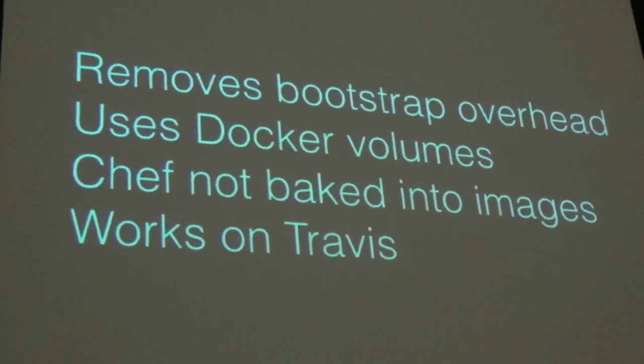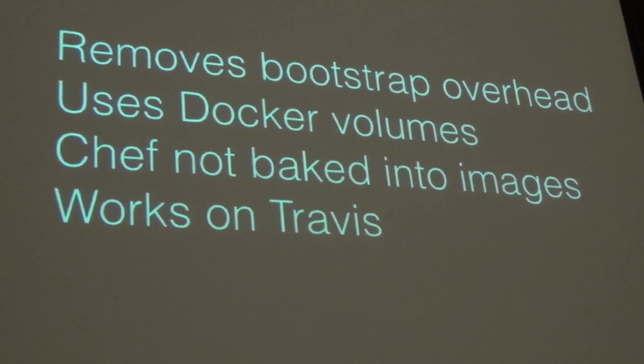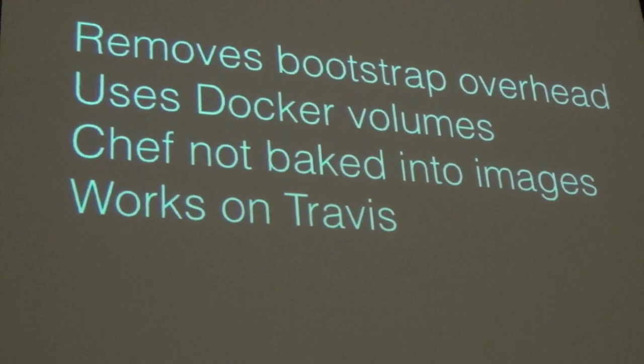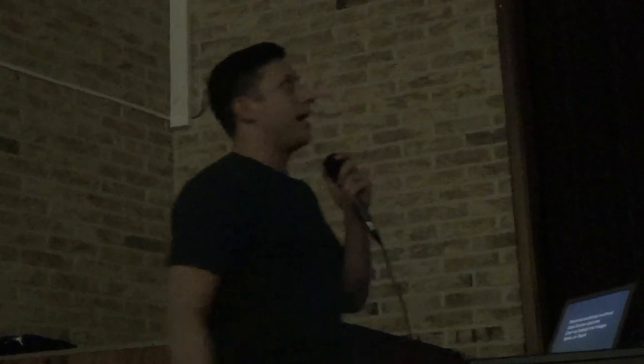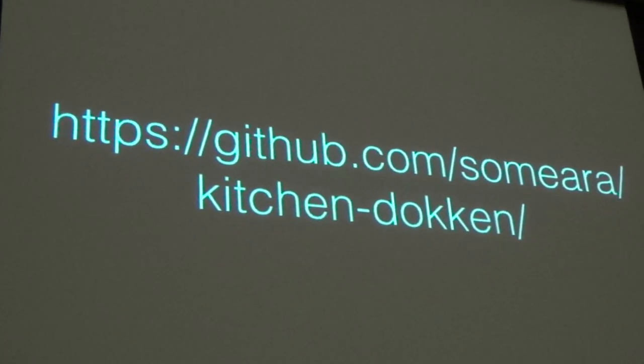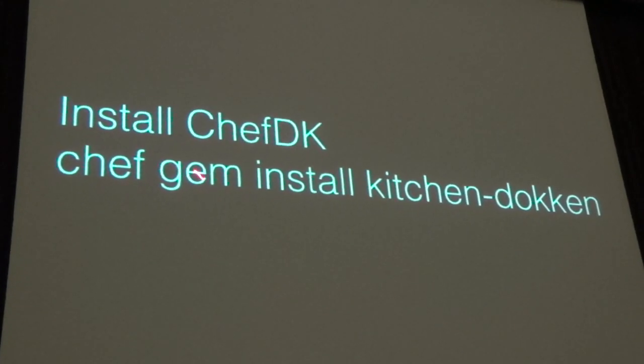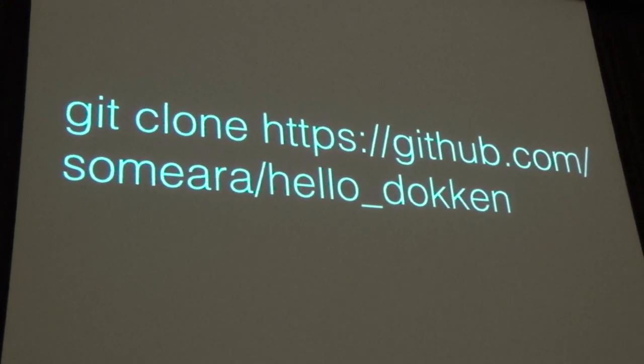When you run Test Kitchen you spend a lot of time waiting because it provisions machines — driving Vagrant, EC2, Digital Ocean. Once it instantiates the machine it bootstraps with your config management tool, downloads Chef or Puppet onto the machine. That's a lot of overhead. I wanted to eliminate that overhead — Docker is fast, oh my god it's fast. I ended up making this plugin to get millisecond container start times using copy-on-write, and I don't want to download Chef every time.